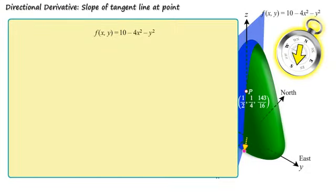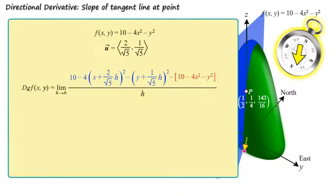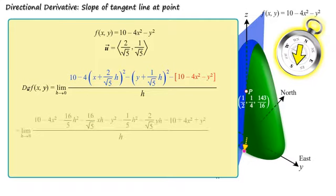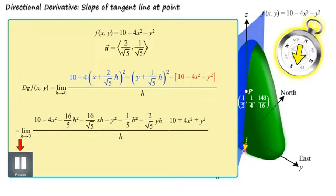Here the second point moves along the direction of vector u. We now apply the definition to this f and this direction vector u. The first step is shown. If you like, pause the video and try computing the limit yourself. Here is the result. Did you get the same thing?